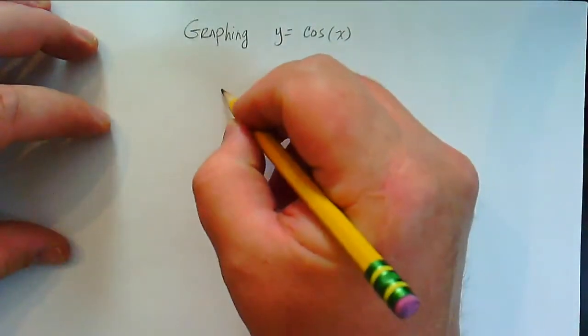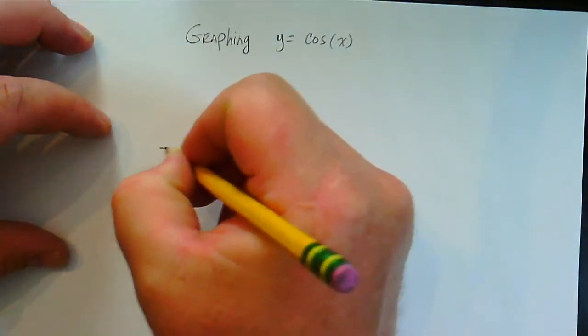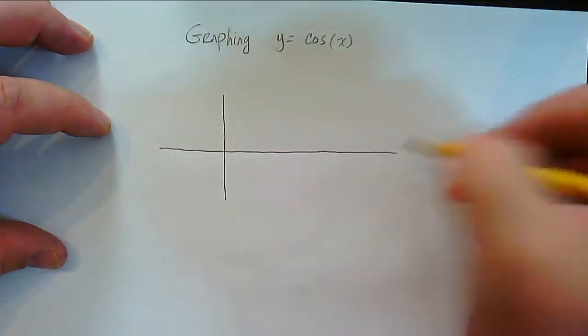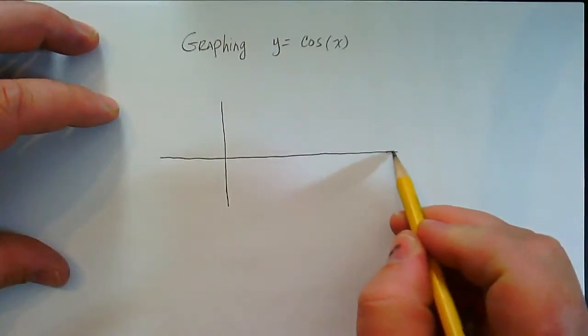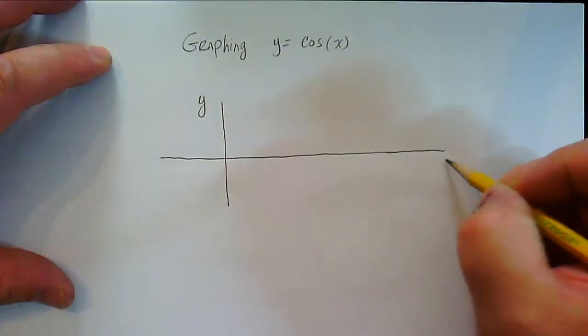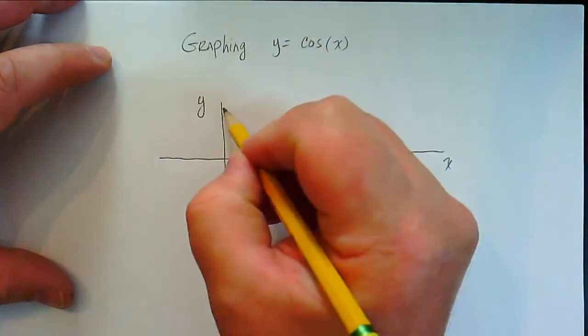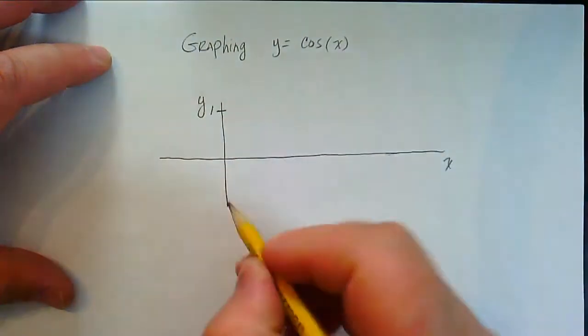this is going to be on a coordinate plane like this, right? And usually when we're graphing trig functions, especially sine and cosine, we don't draw the x and y axis to scale because, well, for sine and cosine, the amplitude is 1.